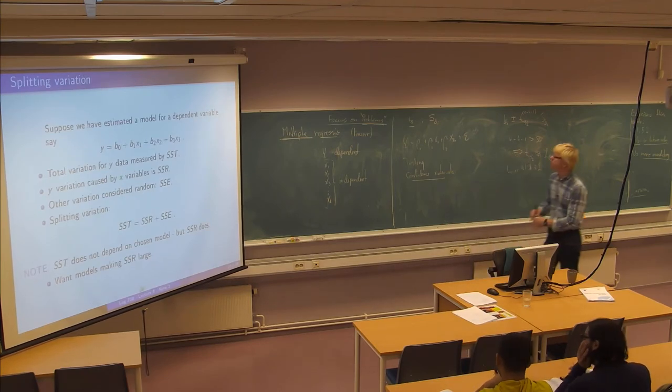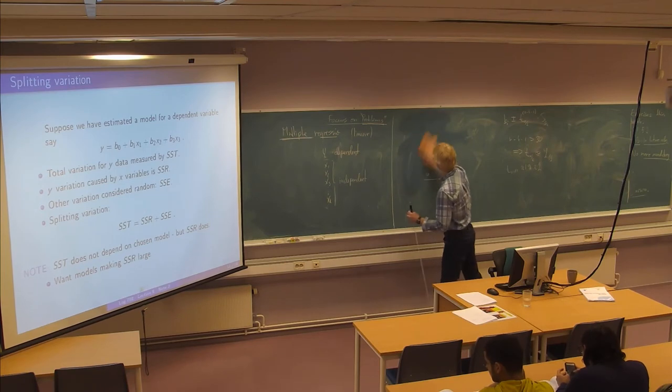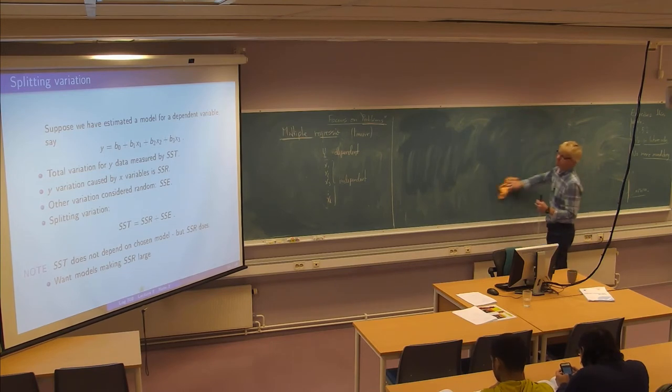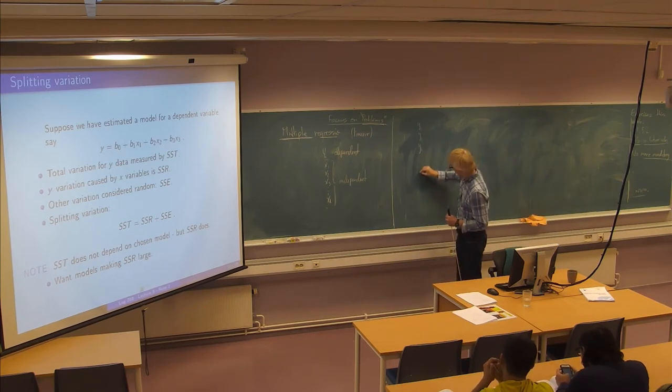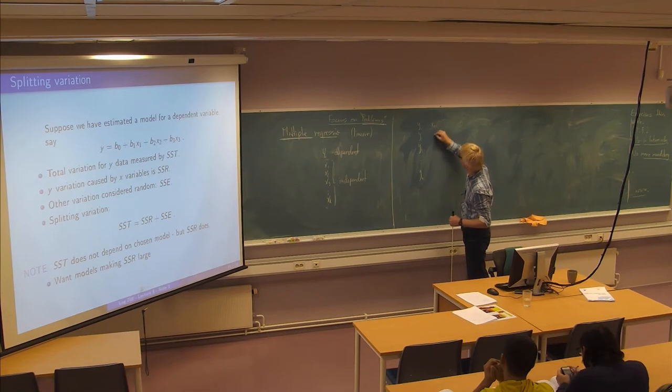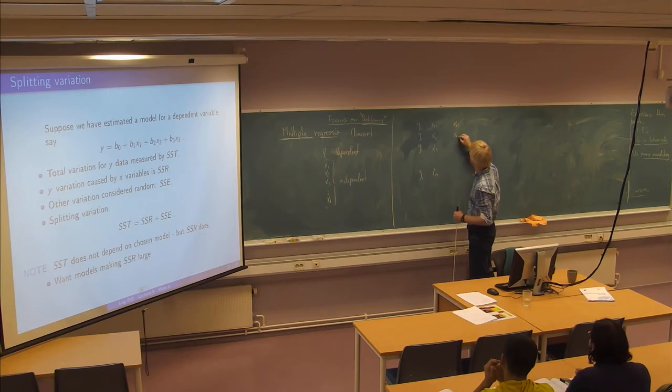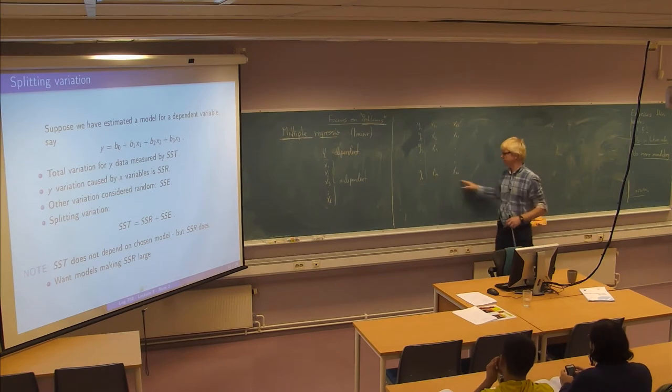So we still have something we call splitting of variation. So you have your y data here, y1, y2, y3, yn and then x 1, 1, x 1, 2, 1, 3, x q, 1. So you have a sort of a matrix of data, you have one dependent variable and then a set of independent variables.